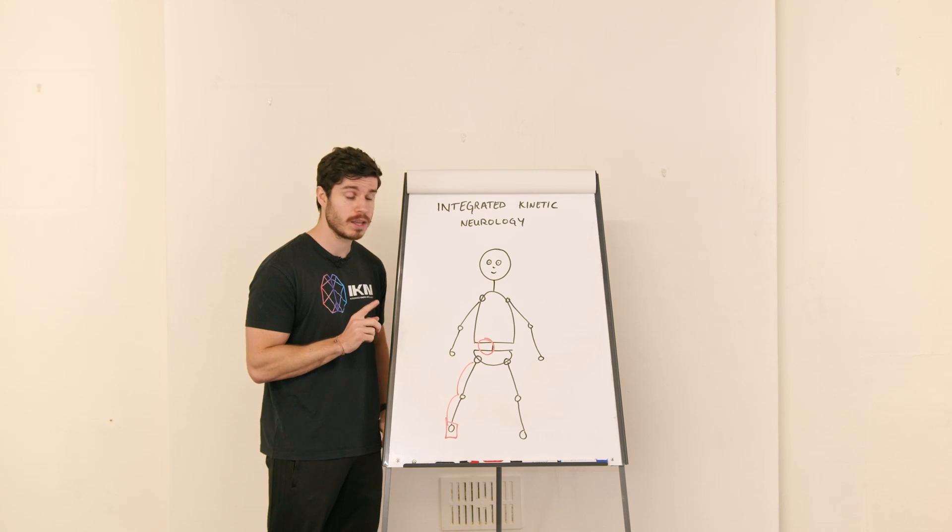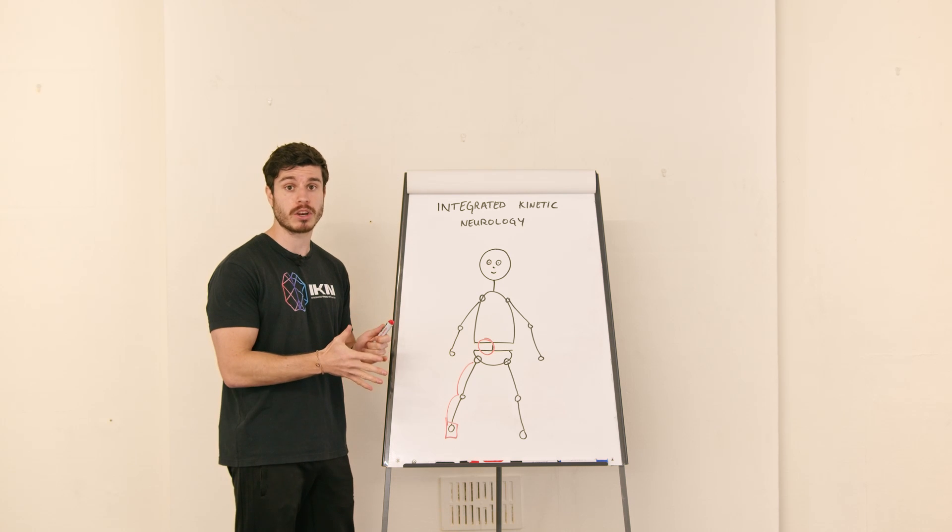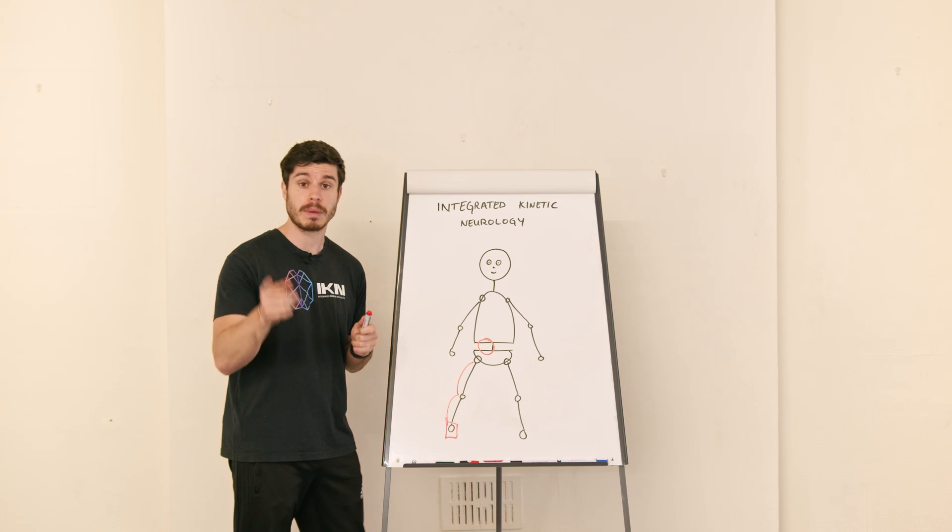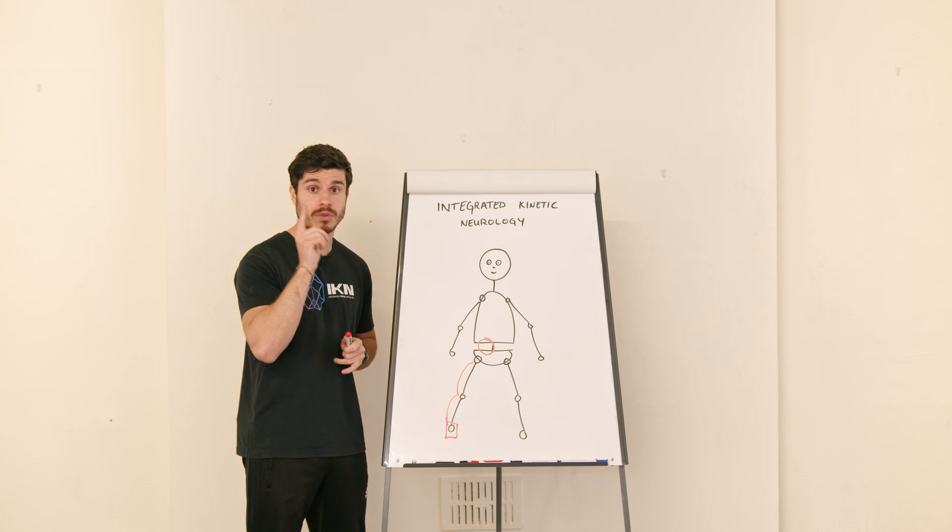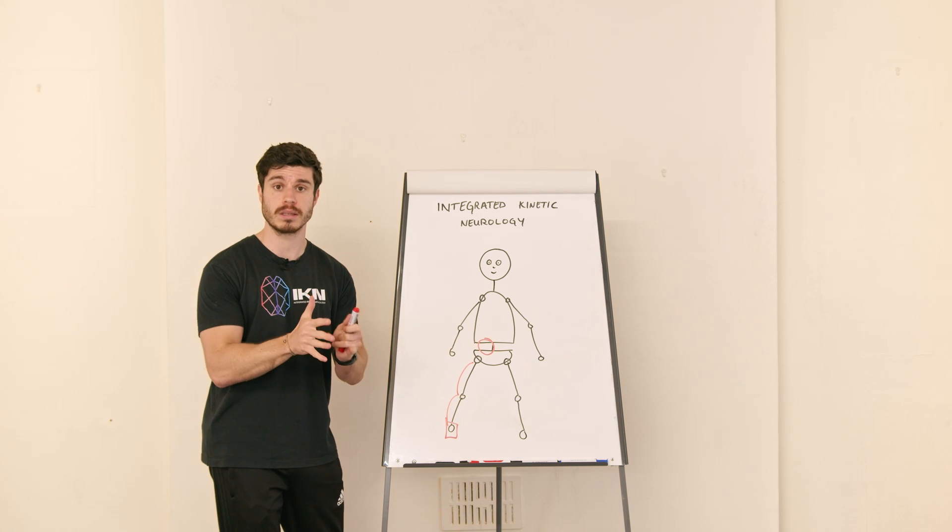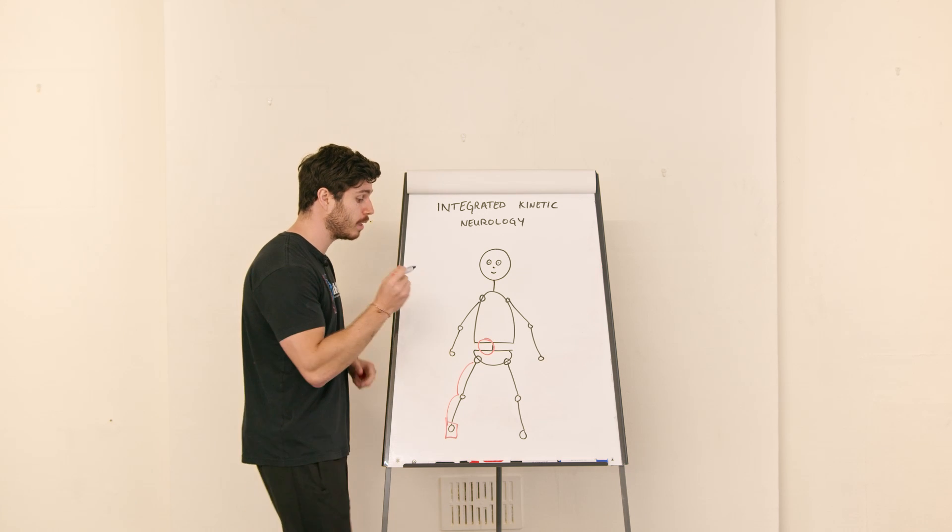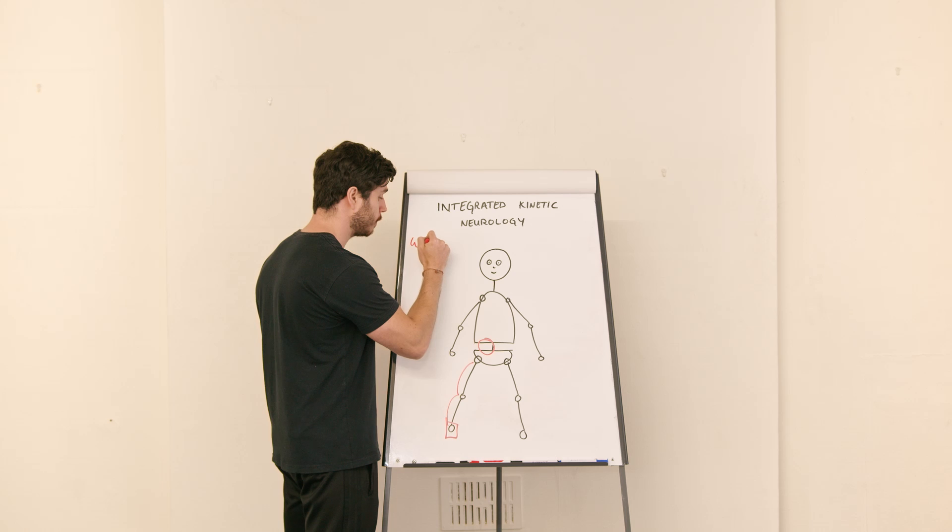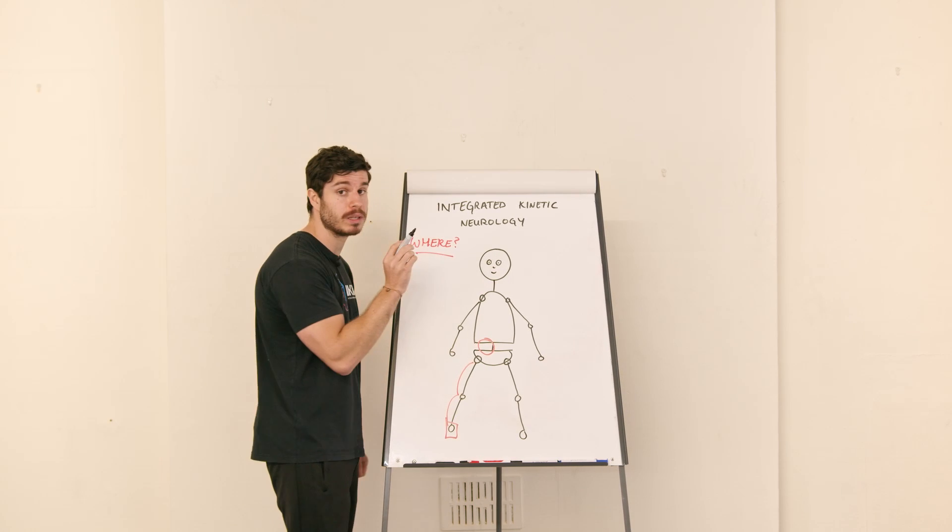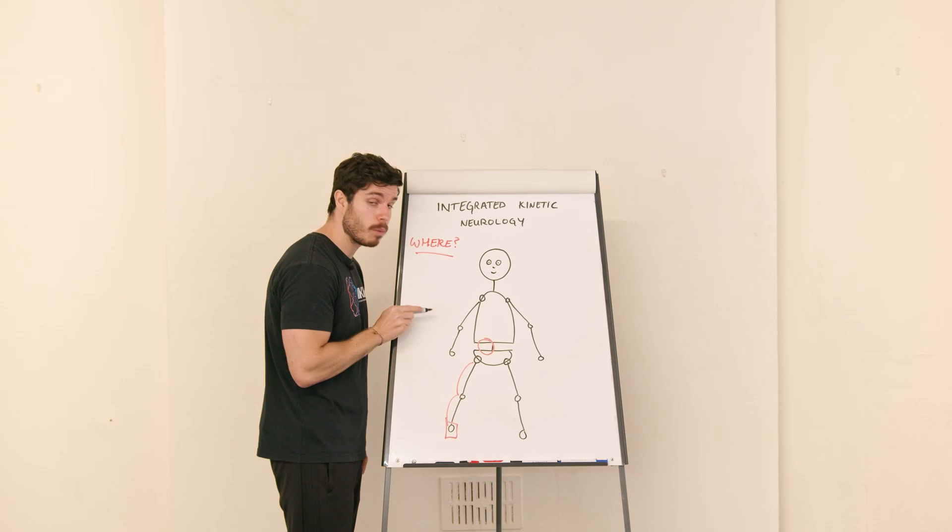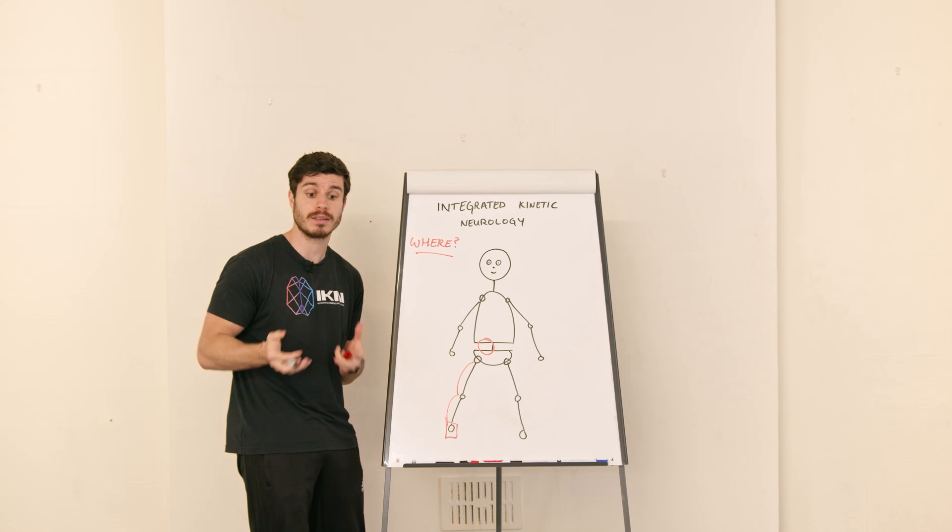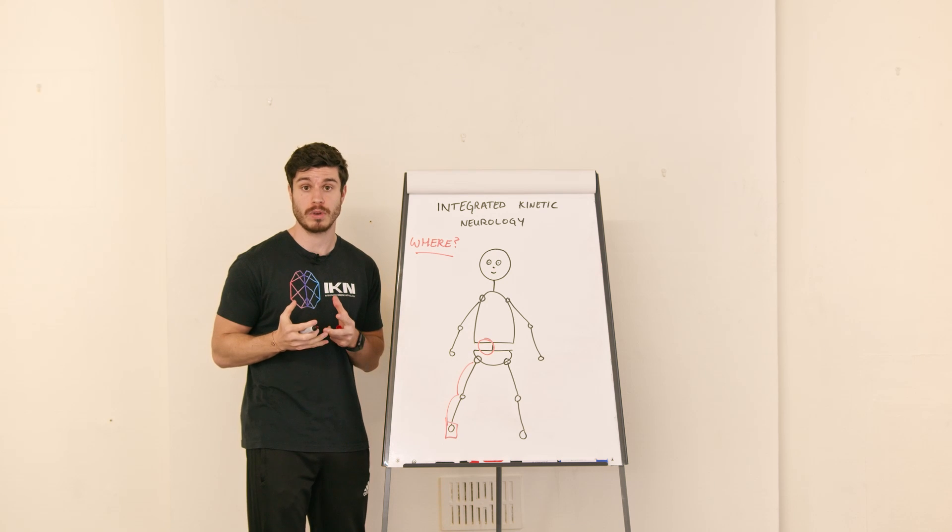So what we need to understand when we're delivering our movement strategies, when we're delivering our rehabilitation strategies—remember in the prior sections we spoke about those strategies all come back to the delivery of stress. You are stressing the system. But the main thing we want to understand is where. Where do we deliver stress? If the lower back is expressing pain, perhaps it's a case where the lower back is expressing pain because it's taking on or it's handling too much stress.